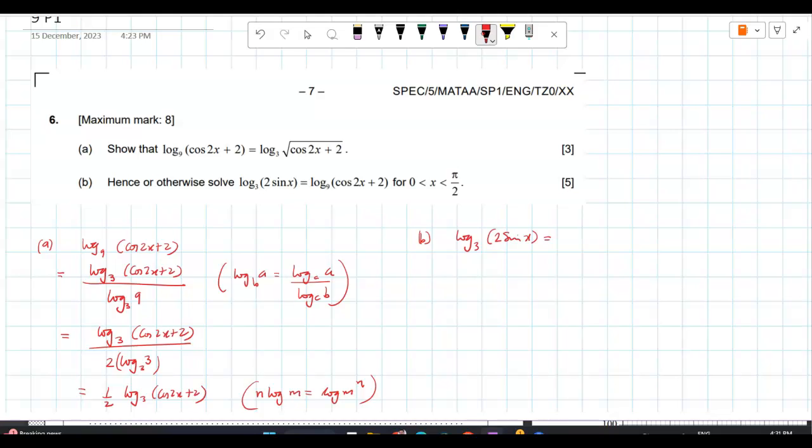So, now this we proved: log 9 to... this is log to the base 3, root cos 2x plus 2. Now, you drop logs on both the sides. So, 2 sin x is equal to what? Root of cos 2x plus 2.